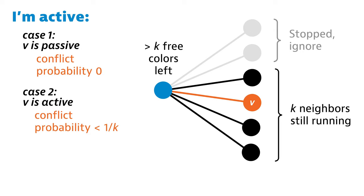So the probability that I make a choice that conflicts with v is less than 1 over k. So overall, the probability that v is active and managed to pick a color that conflicts with me is less than 1 over 2k.